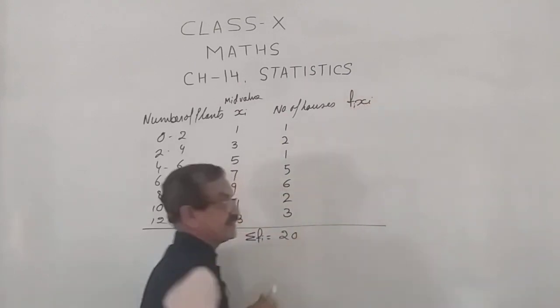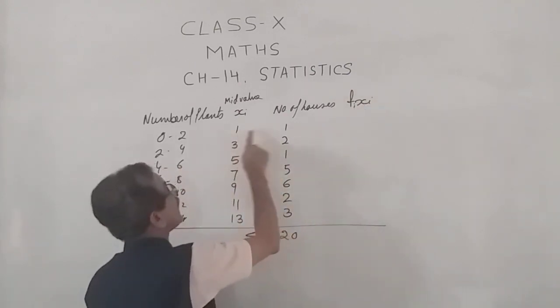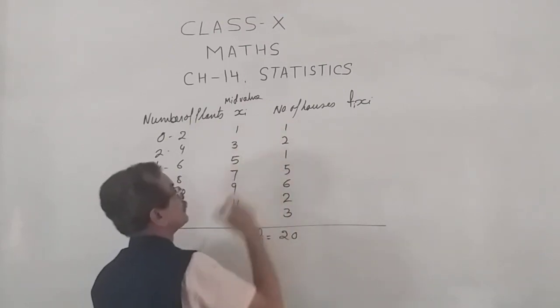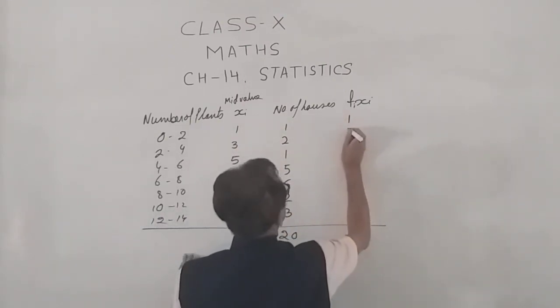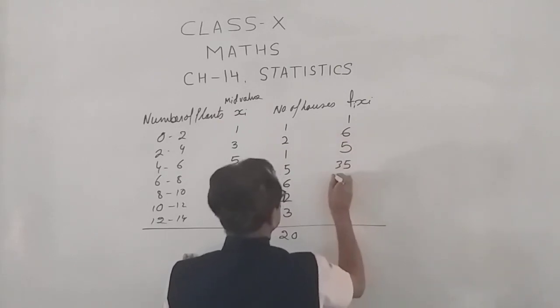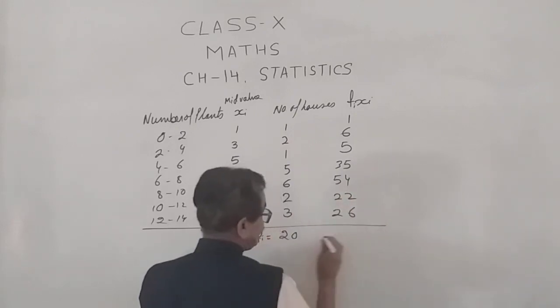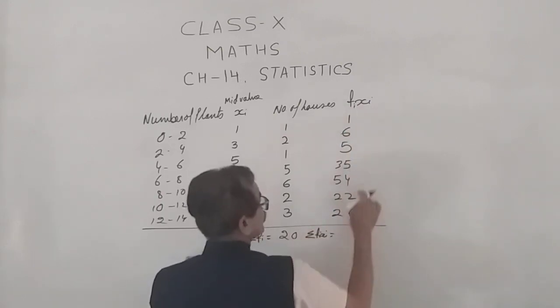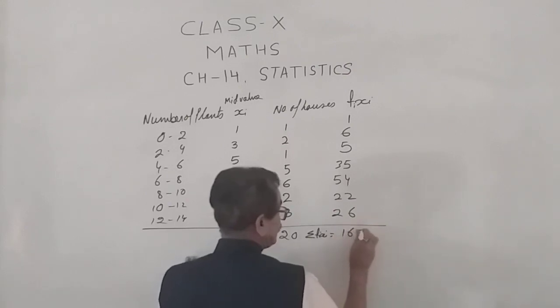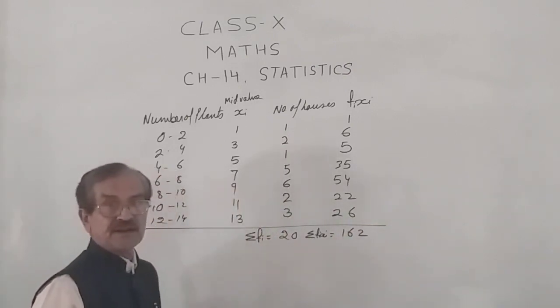Fi into xi - I'm going to find the product of these two columns: 1, 6, 5, 35, 54, 22, and 26. This is called sigma fi xi, the sum of this column, which is 162. Now we will calculate the mean.